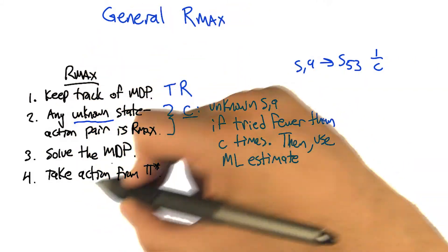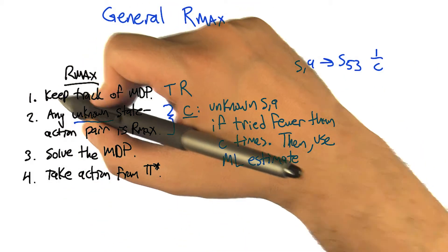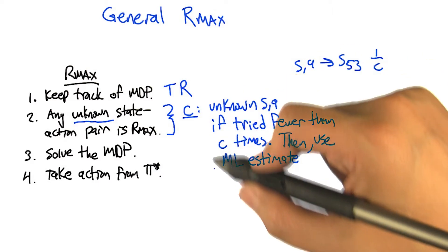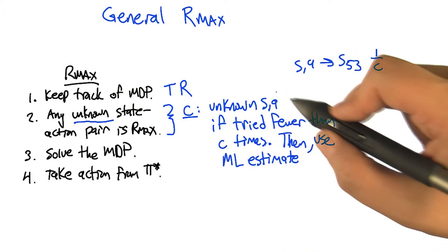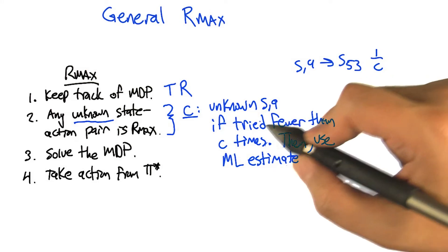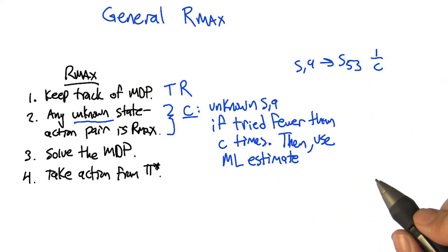So I just want to point out that this is the RMAX algorithm we used in the deterministic case, and this very much is related to the Hoeffding bound estimate we used in the stochastic non-sequential case, in the bandit case, which is grafting the two things together.